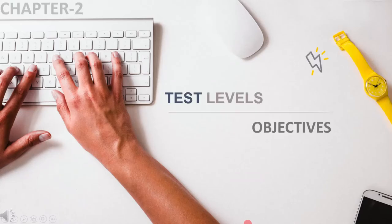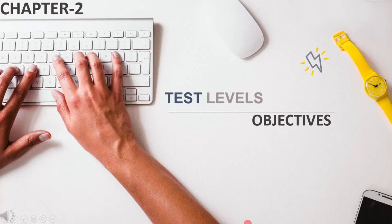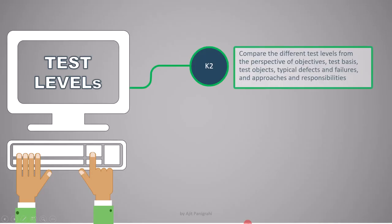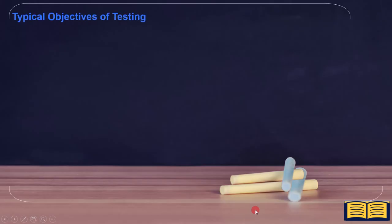In this lecture, we will cover the objectives of different test levels. The learning objective here is to compare the different test levels from the perspective of objectives, test basis, test objects, typical defects and failures, approaches and responsibilities. Before going through the objective of each test level, let's quickly go through the objective of testing, because test level objectives are derived from these main objectives.